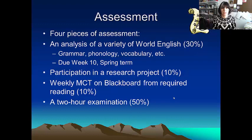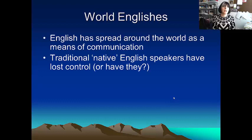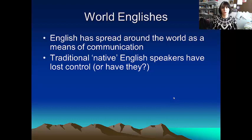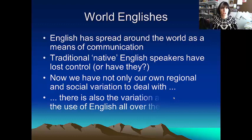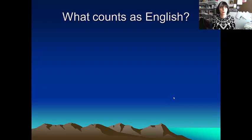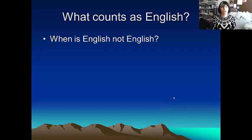English is spread around the world as a means of communication, and traditional native speakers of English have basically lost control of it. It's something which is changing so much that it's not in the control of native speakers anymore, unless we're talking about language tests, where native speakers still have some control over what's going on. So we don't only have our own regional and social variation to deal with in the UK — there's also regional and social variation arising from English used all over the world, and that's one of the things that makes it really interesting. So what does count as English? When is English not English? Do we consider a pidgin or a creole based on English to be a type of English?